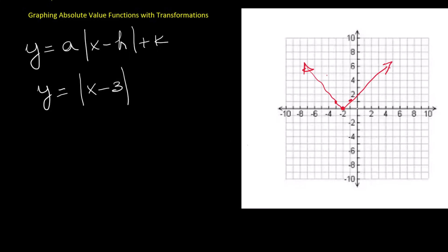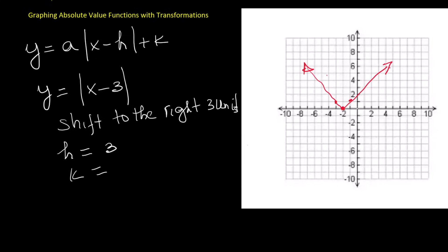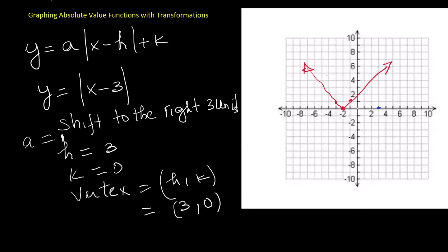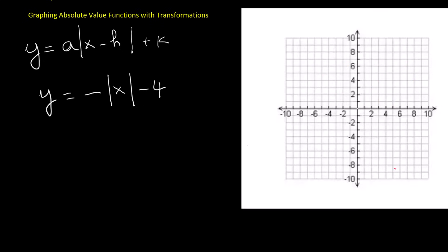Now let's look at another example. The function is y equals the absolute value of x minus 3. In the transformation form y equals a times the absolute value of x minus h plus k, the value of h is 3, the value of k is 0, and the value of a is 1. That means the vertex is located at 3 comma 0. The graph has shifted three units to the right from the parent function.